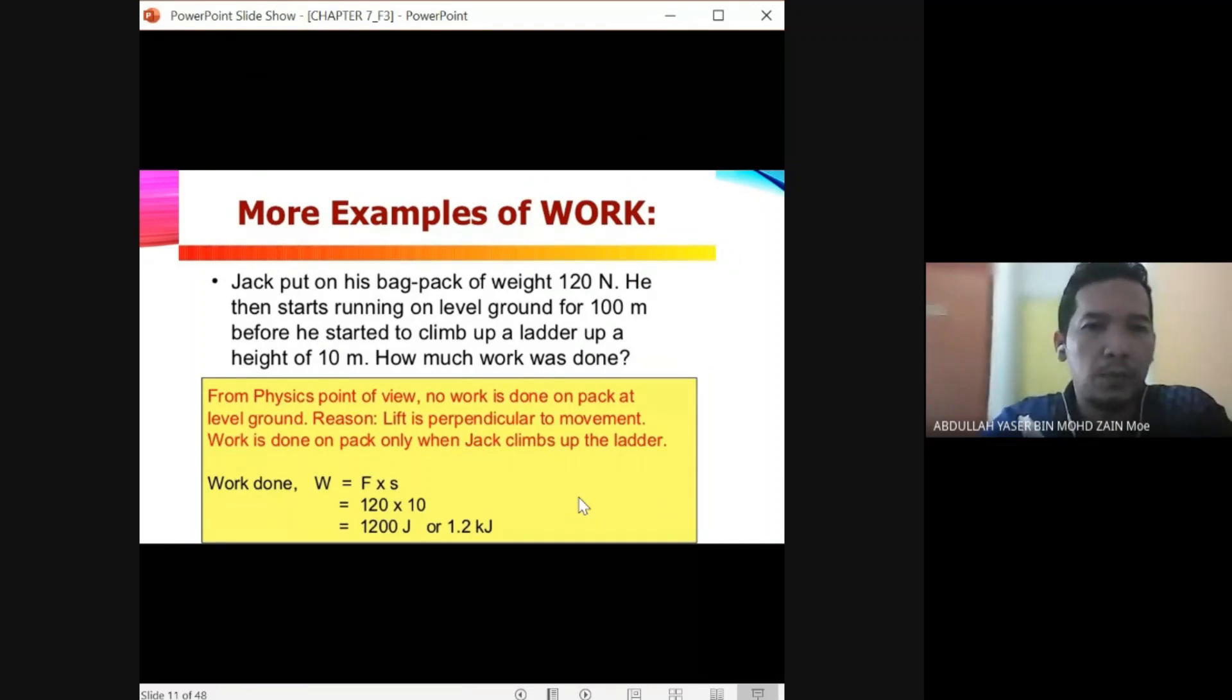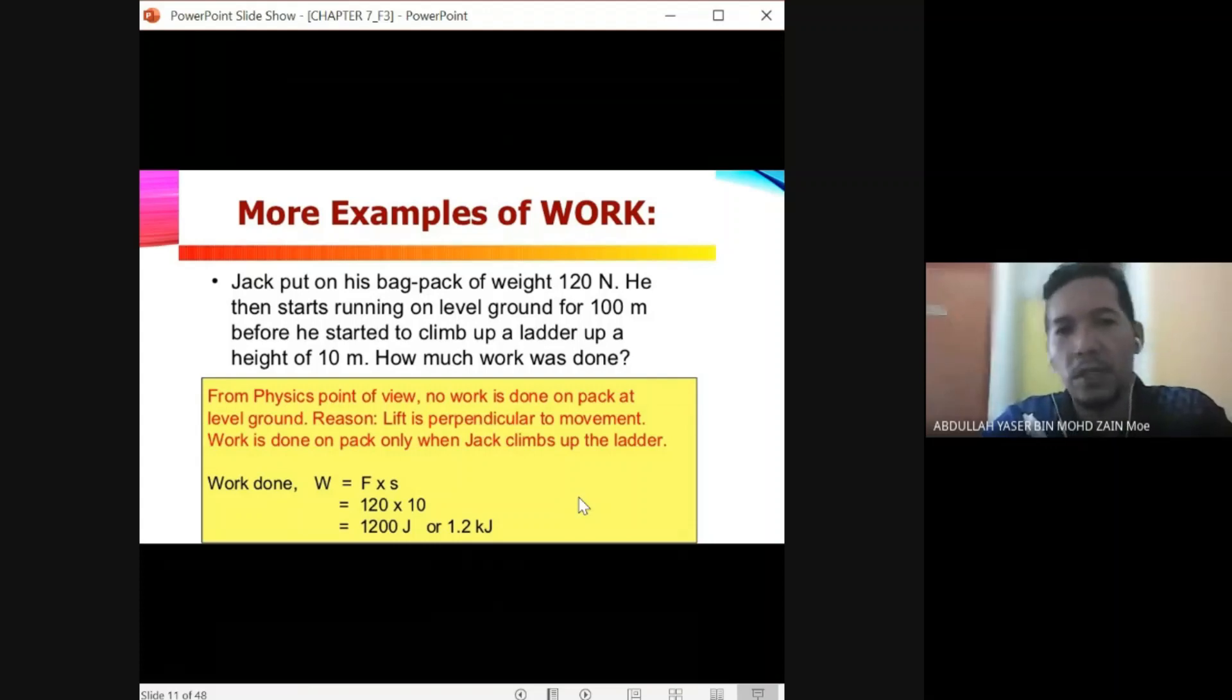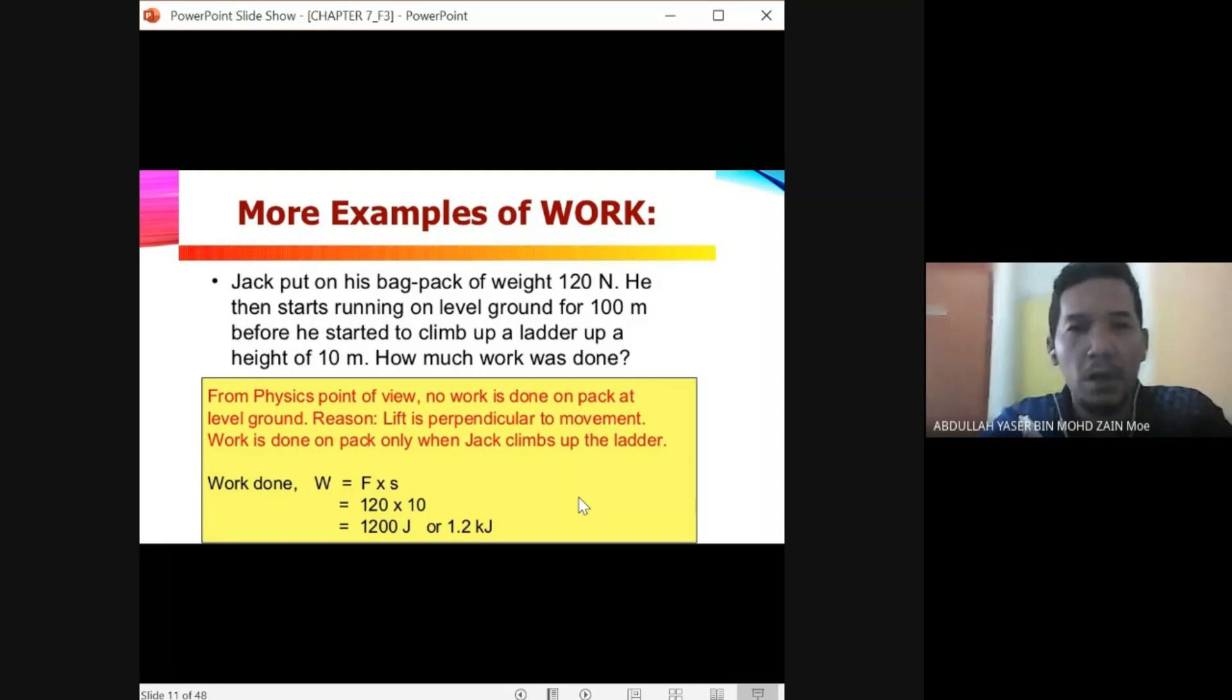Jack put on his backpack of weight 120 newtons. He then started running on level ground for 100 meters before he started to climb up at a height of 10 meters. How much work was done?